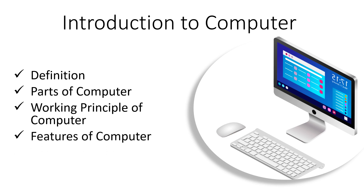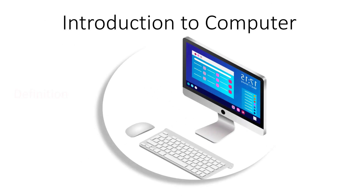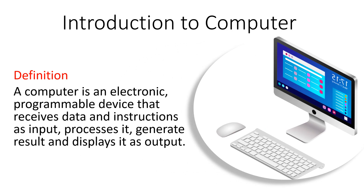So let's start with the definition of computer. A computer is an electronic programmable device that receives data and instructions as input, processes it, generates result, and displays it as output. It works by receiving data as input and giving us the output after processing. The word programmable means our computer can be programmed to work according to our need and desire — we can give instructions to our computer in the form of programs.